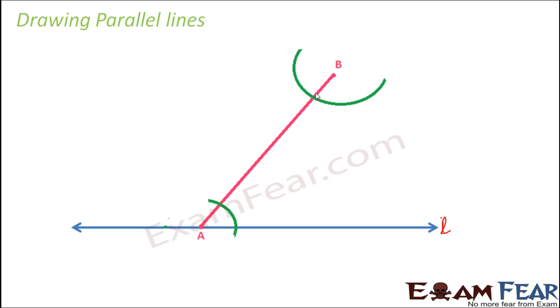What we have basically done here is we have considered A as the center. Taking A as center, we have drawn an arc like this. Similarly, taking B as center, we have drawn an arc like this. Now we have made sure that we have kept the same radius. You have kept the needle of the compass here and you have drawn this arc. Now keep this compass in the same position, take it here, keep the needle here and then draw this arc.